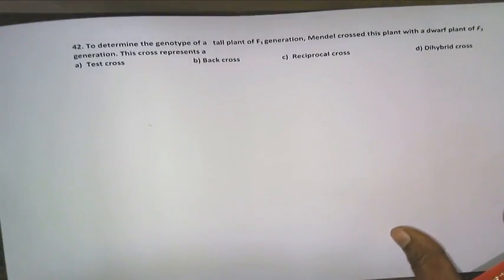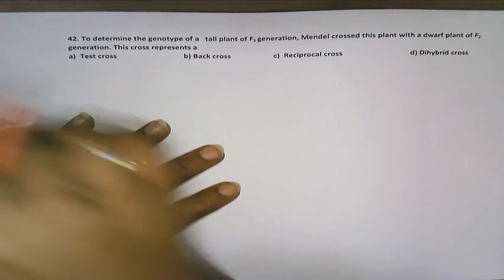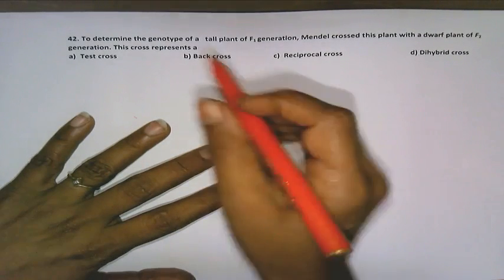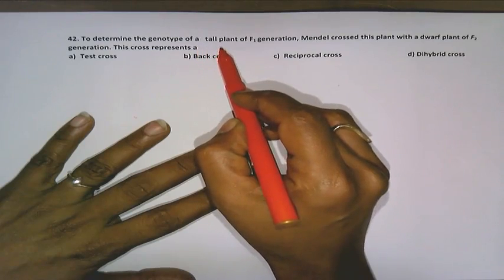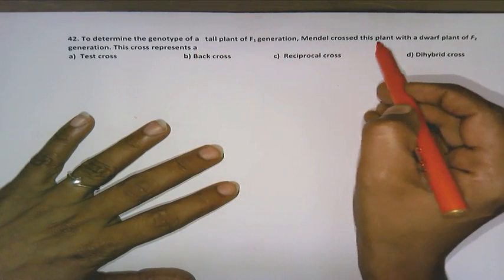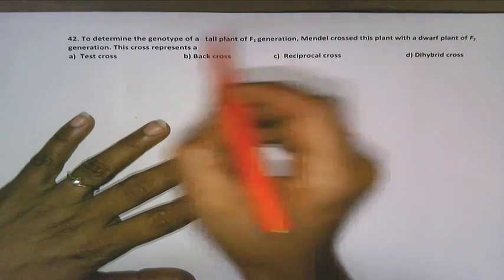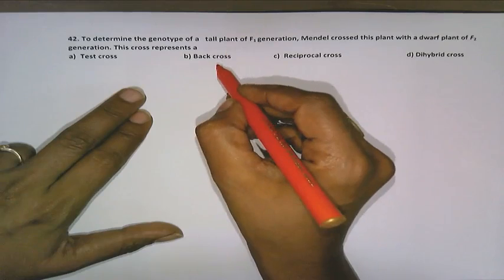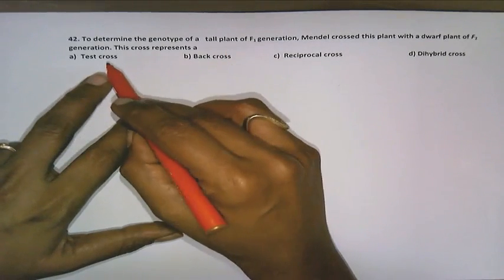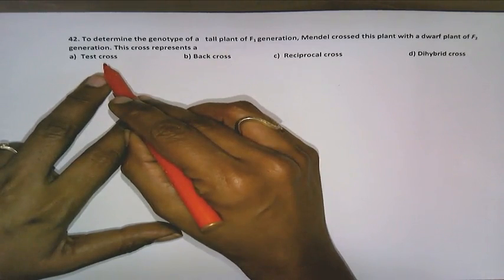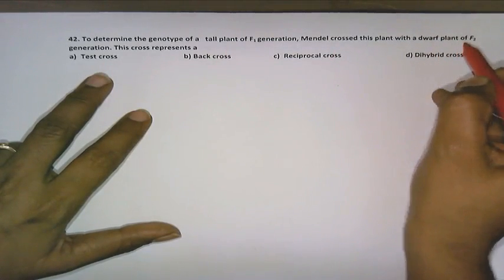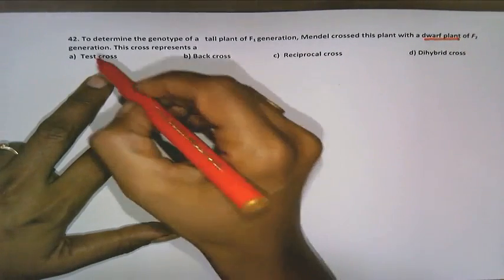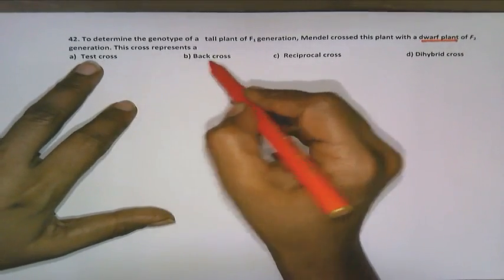As we move on to next question, question number 42. Here we need to identify that. To determine the genotype of a tall parent of F1 generation, Mendel crossed this plant with a dwarf plant of F2 generation. This cross represents, definitely it is a back cross. But precisely, this is more precisely a test cross, because here we are talking about dwarf plant. Dwarf plant means recessive individual. And that is why test cross is right than back cross.